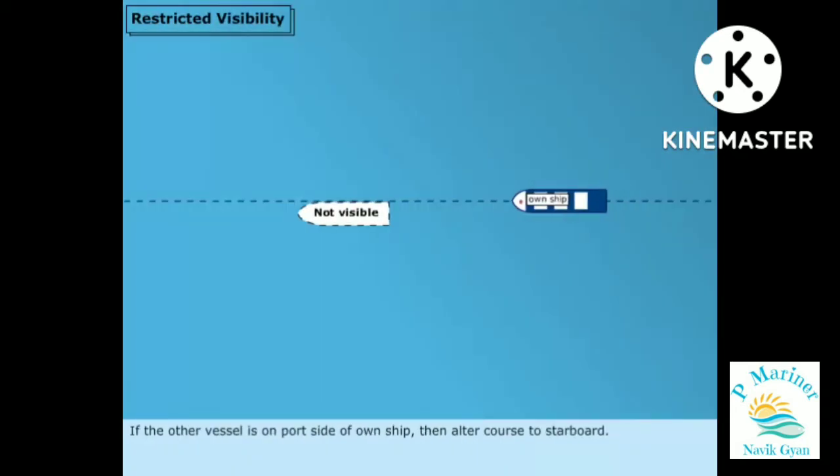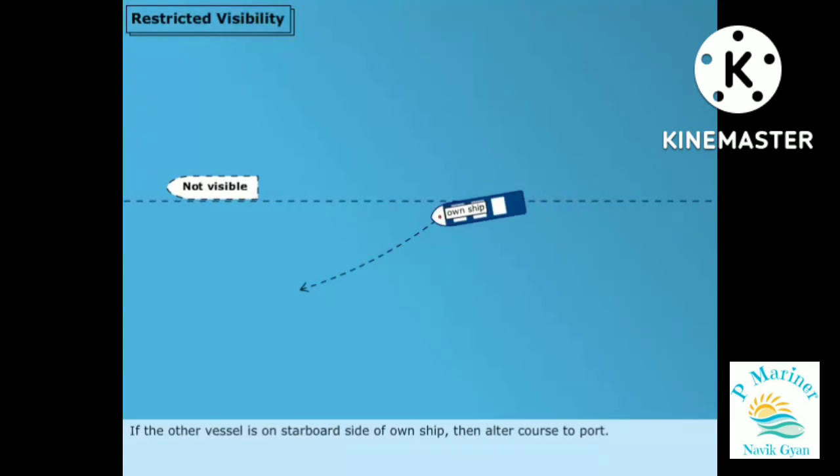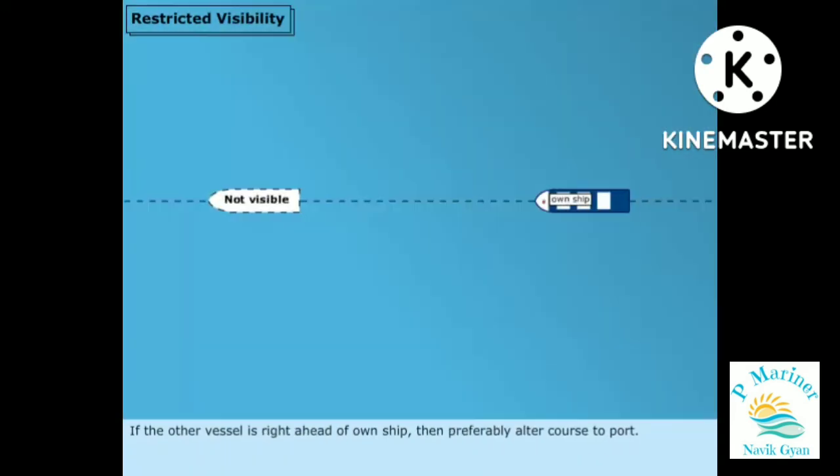If the other vessel is on port side of own ship, then alter course to starboard. If the other vessel is on starboard side of own ship, then alter course to port. If the other vessel is right ahead of own ship, then preferably alter course to port.